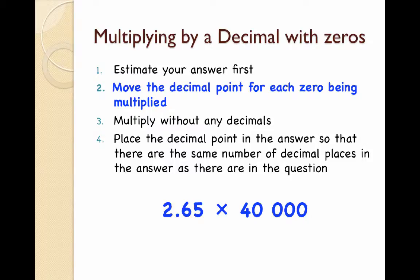After we estimate our answer, what we're going to do is move the decimal point for each zero being multiplied. Then we're going to continue on with our steps. Now, I've got two examples to show you exactly what I mean, so here they are.